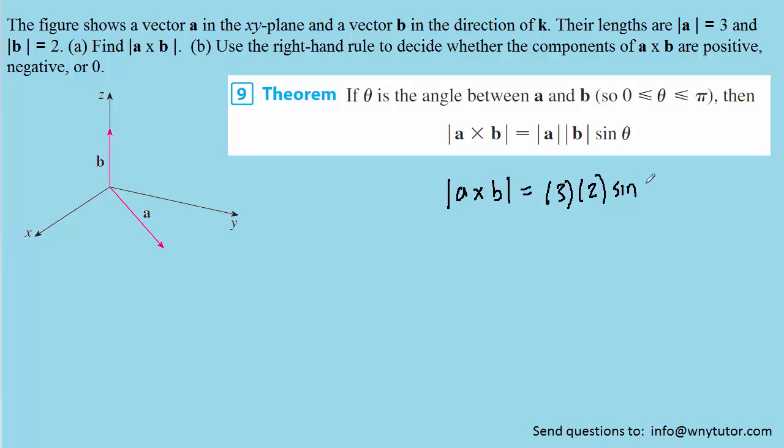We can look at the figure to determine the angle between the vectors A and B. And if we look carefully, we can see that the angle between the two vectors is actually 90 degrees. So we can plug in 90 in for the angle.